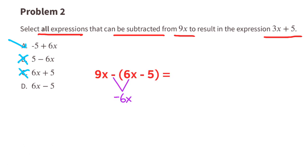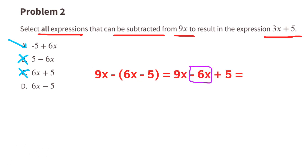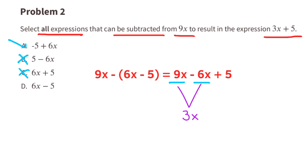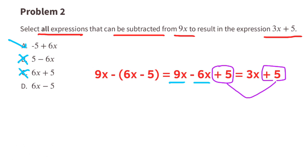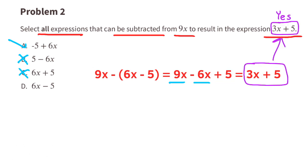Option D: a negative times a positive is a negative, and a negative times a negative is a positive. So the expression reads 9x minus 6x plus 5. Let's combine the terms that have an x: 9x minus 6x is 3x. The expression now reads 3x plus 5, and yes, that matches the original expression.